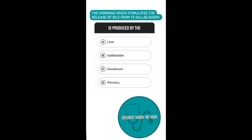Question 2. The hormone which stimulates the release of bile from the gallbladder is produced by? Option A, liver. Option B, gallbladder. Option C, duodenum. Option D, pituitary.